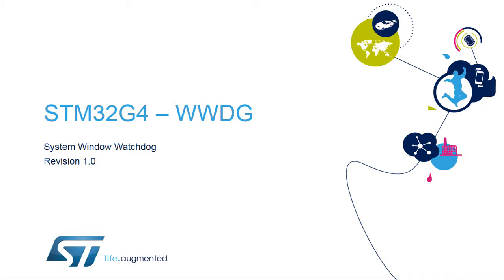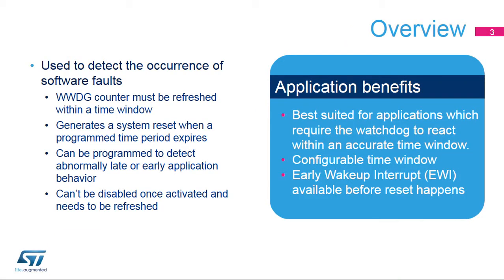Hello, and welcome to this presentation of the STM32 System Window Watchdog. It will cover the main features of this peripheral used to detect software faults. The Window Watchdog is used to detect the occurrence of software faults. The Window Watchdog can be programmed to detect abnormally late or early application behavior.